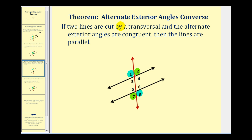The next theorem is the alternate exterior angles converse, which tells us that if two lines are cut by a transversal and the alternate exterior angles are congruent, then the lines are parallel. So if angle one is congruent to angle eight, or angle two is congruent to angle seven, the lines would be parallel.